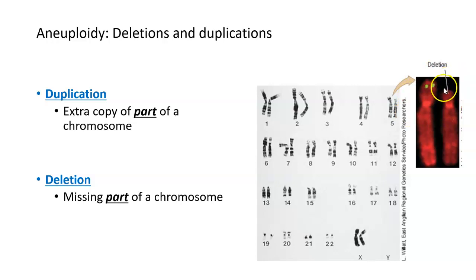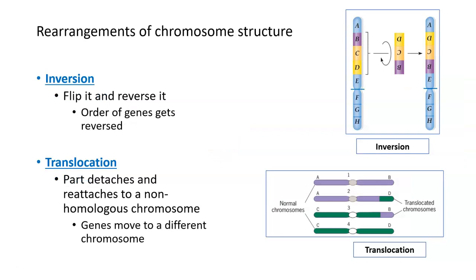In a duplication, what you might see is a chromosome having another area up top with two additional green dots. In addition to lacking some chromosome or having a little bit extra, or having full extra copies or missing a copy, there can also be rearrangements of chromosome structure where none of the chromosome is technically missing from your genome, but it's not in the correct order or in the correct place. Two of these rearrangement-type situations are inversions and translocations.